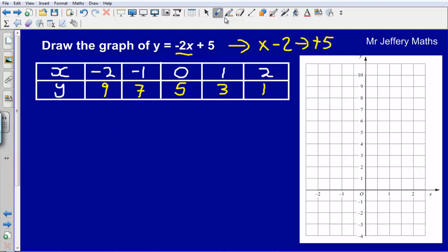So this gives us our coordinates. All we're going to do now is plot our coordinates onto our graph and draw a line through them. So minus 2, 9. Next one minus 1, 7. Next one 0, 5. 1, 3. And 2, 1.